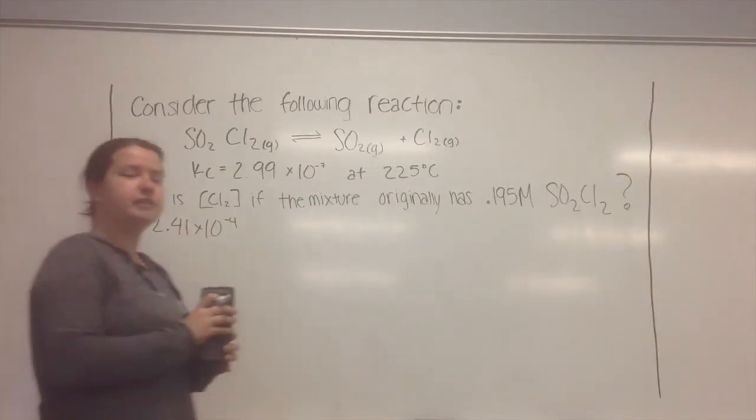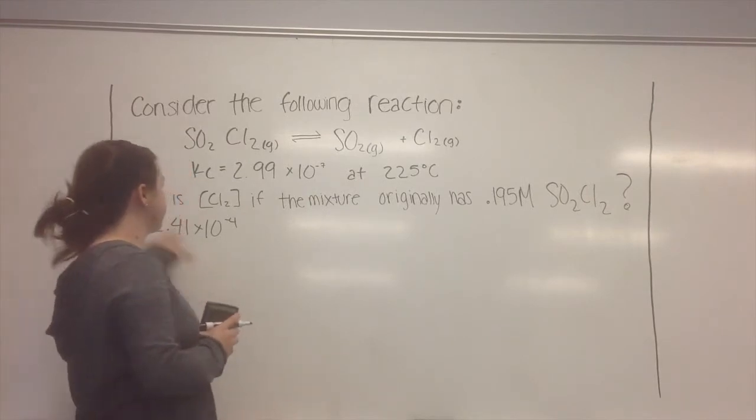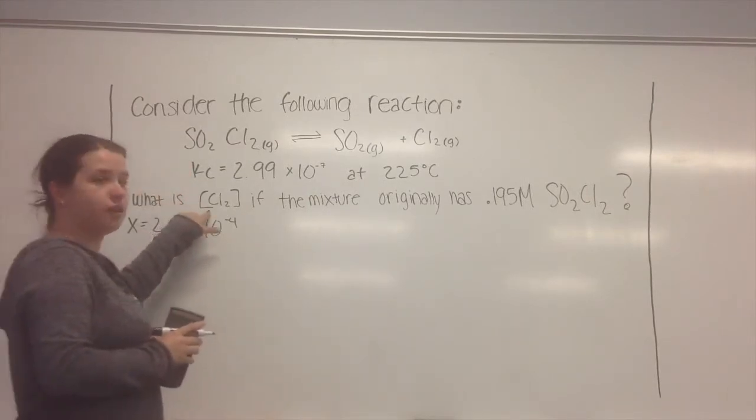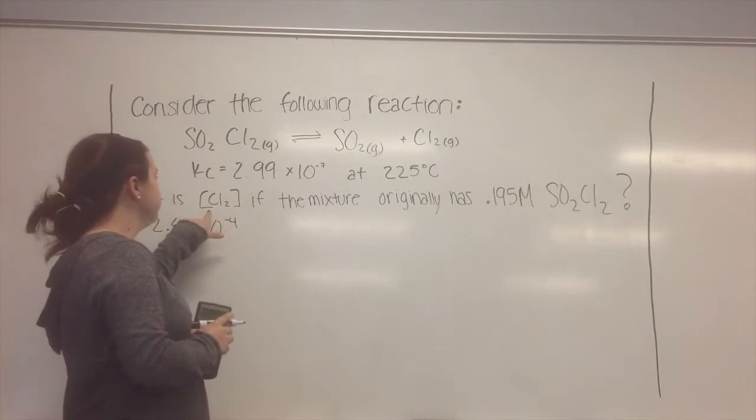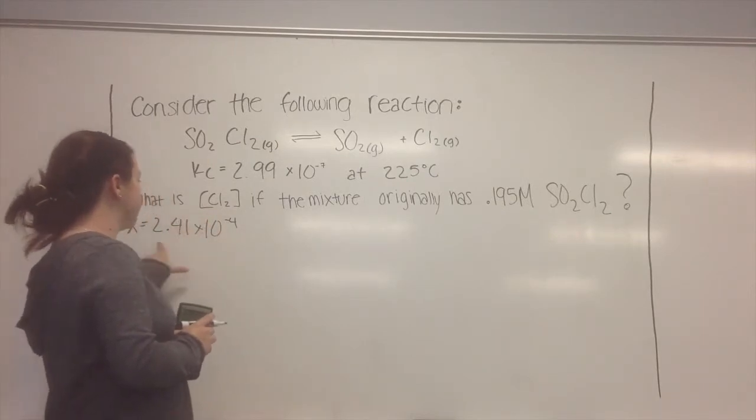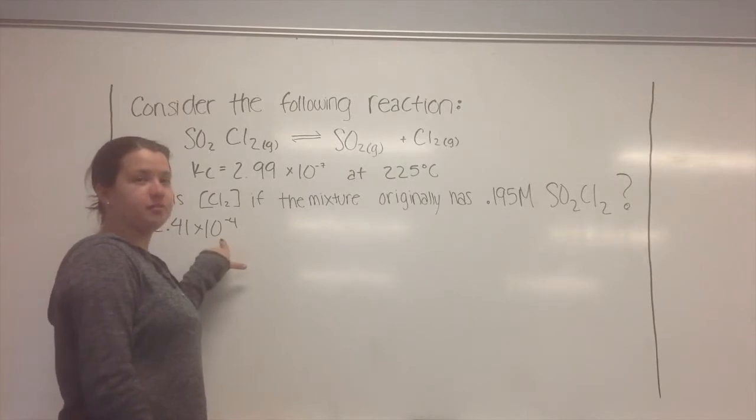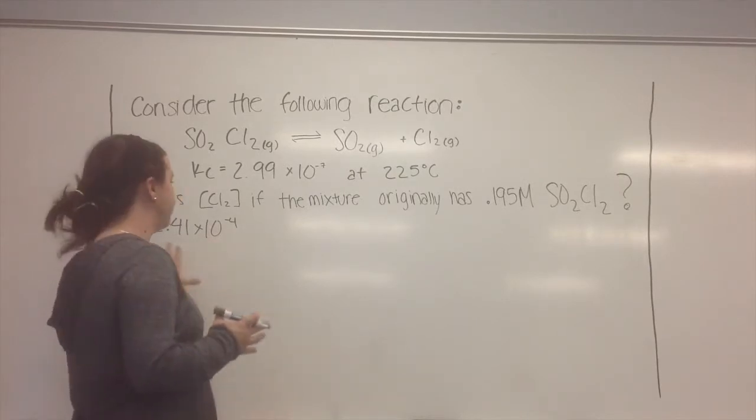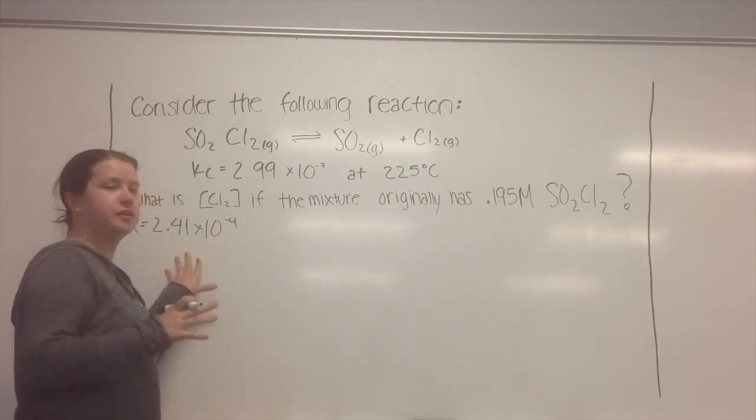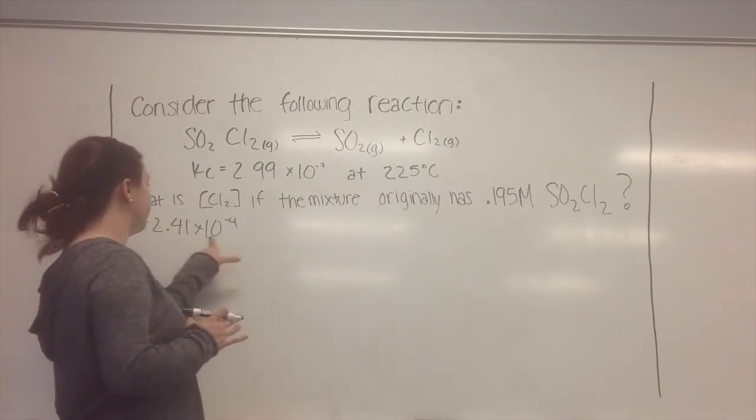Okay, so in the previous problem we figured out that the X for this problem, which is also the concentration of Cl2, is this value right here. And we found this value using the X is small approximation. So to prove that this is actually correct, what we're going to do is make sure that this value is 5% or less of the original amount given.